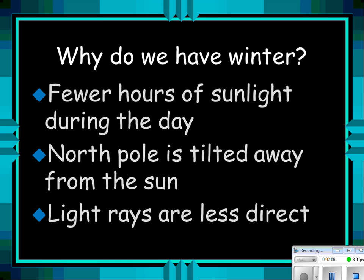Why do we have winter? Fewer hours of sunlight during the day, so it gets colder. The North Pole is tilted away from the Sun, so we're not getting as much Sun. The light rays are less direct because we're tilted away from the Sun, so the Sun rays aren't beating directly down on the Northern Hemisphere.